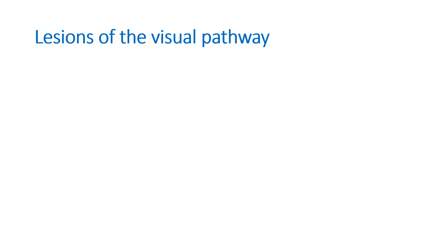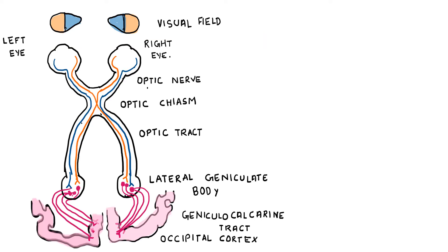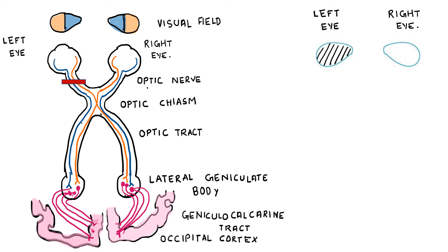Next let's see about the lesions of the visual pathway. We are transecting the pathway at different levels and seeing what happens to the visual field. First, transecting at the level of the optic nerve — the vision of that eye will be lost. This condition is known as anopia. If the optic nerve is cut there will be anopia of that eye.